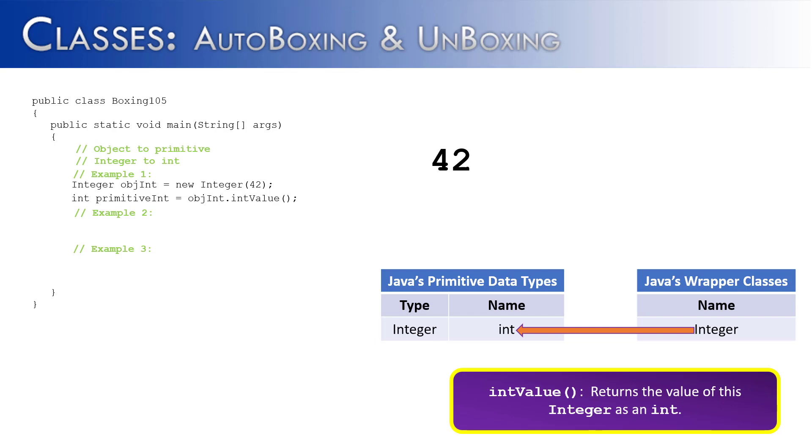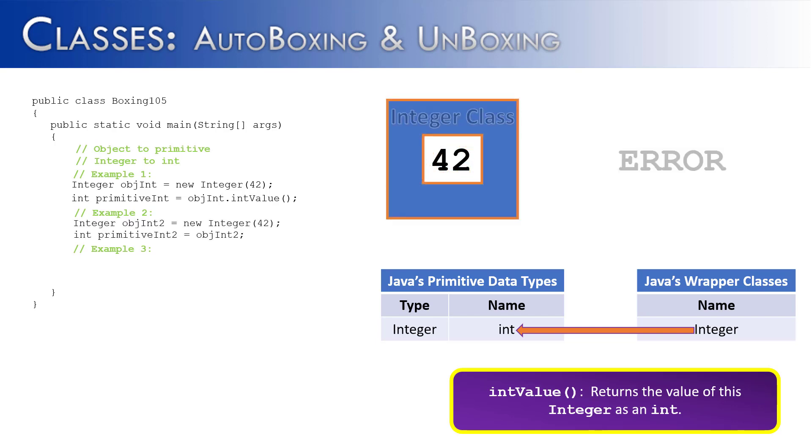So let's see if there is another way that we can accomplish this in example 2. We create an integer object called objint2, we wrap 42 inside of it, and then on the second line we have primitiveint2 but instead of calling the method intValue we just have objint2 there. Now is this going to unwrap it or is it going to create an error? We really have those two choices, unwrapping or error.